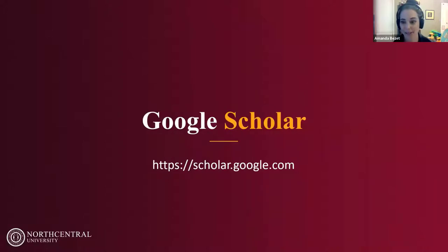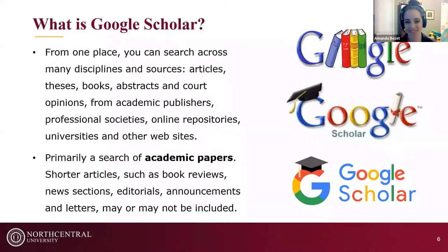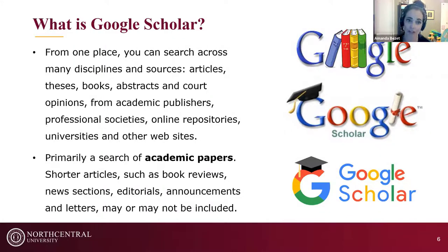Today we're going to start with Google Scholar, where we spend the most time because it is such a valuable tool for finding academic research. Google Scholar is a freely accessible search engine that lets you search across many disciplines and sources — articles, theses, books, abstracts, and court opinions — from academic publishers, professional societies, online repositories, universities, and other websites. It is primarily a search of academic papers.